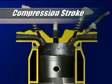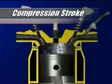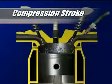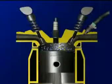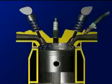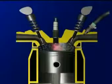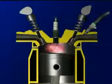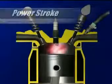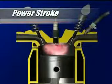At the appropriate time, a spark is produced to ignite the mixture. As the mixture burns, it exerts a tremendous amount of energy on top of the piston causing it to move downward. This begins the power stroke.